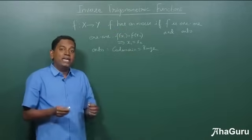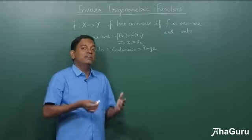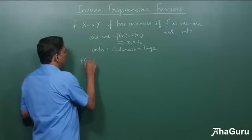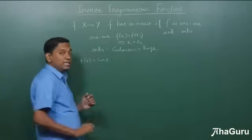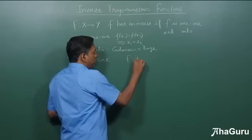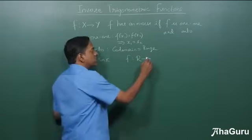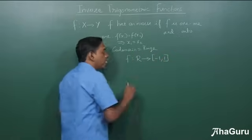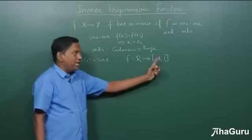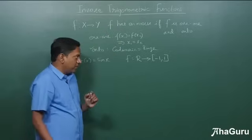Now let's take the trigonometric function for which we need to find inverse. Let's start with sin x. First, let's take f(x) equals sin x. The domain of this function is all real numbers, so f is defined from all real numbers to the range of this function, which is minus 1 to 1.